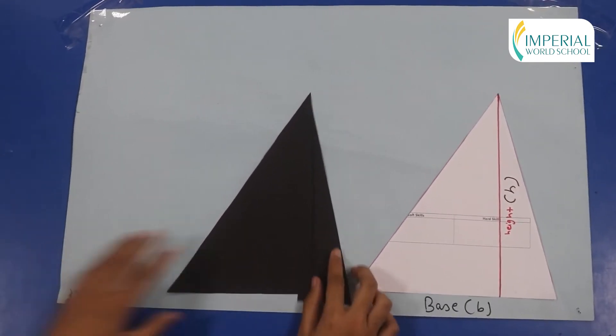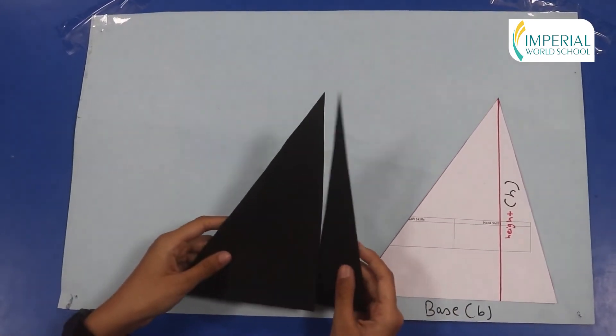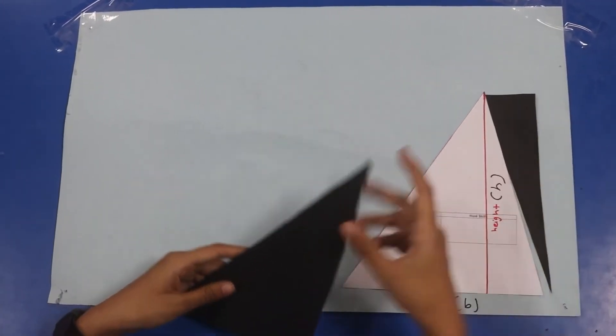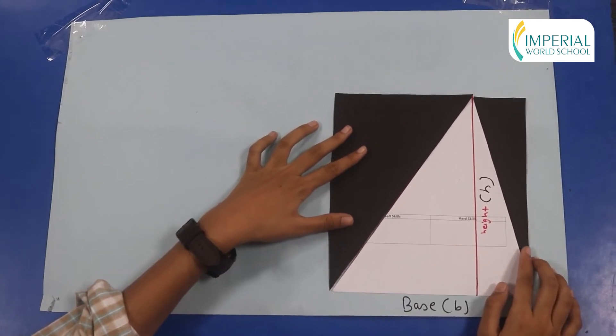Now if I take this triangle which is congruent to this triangle and cut it along its height and rearrange it with this triangle in such a way that it forms a rectangle.